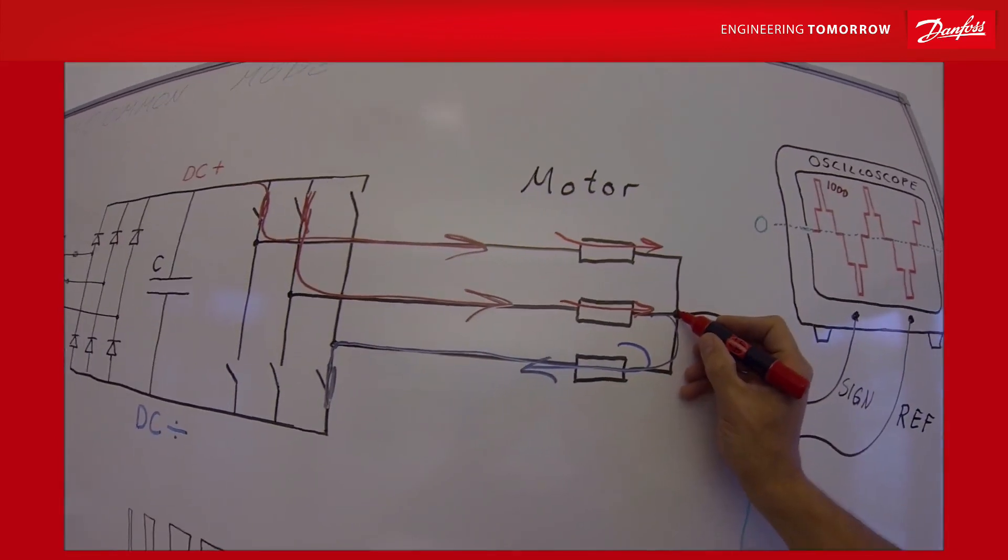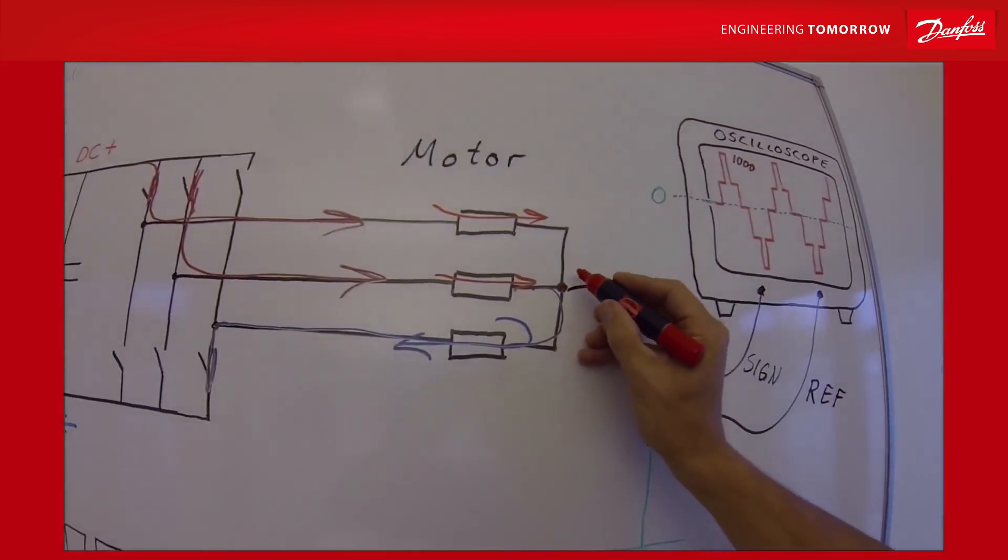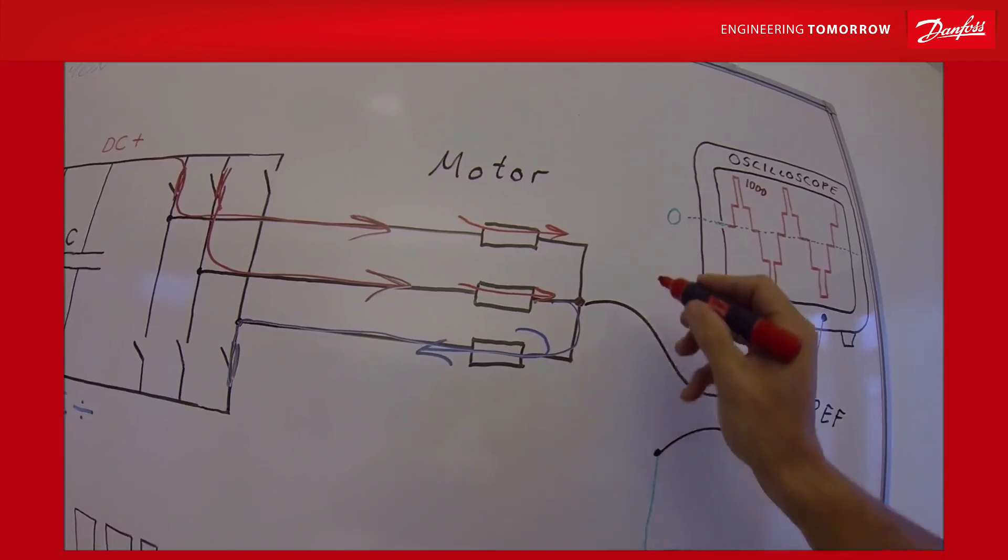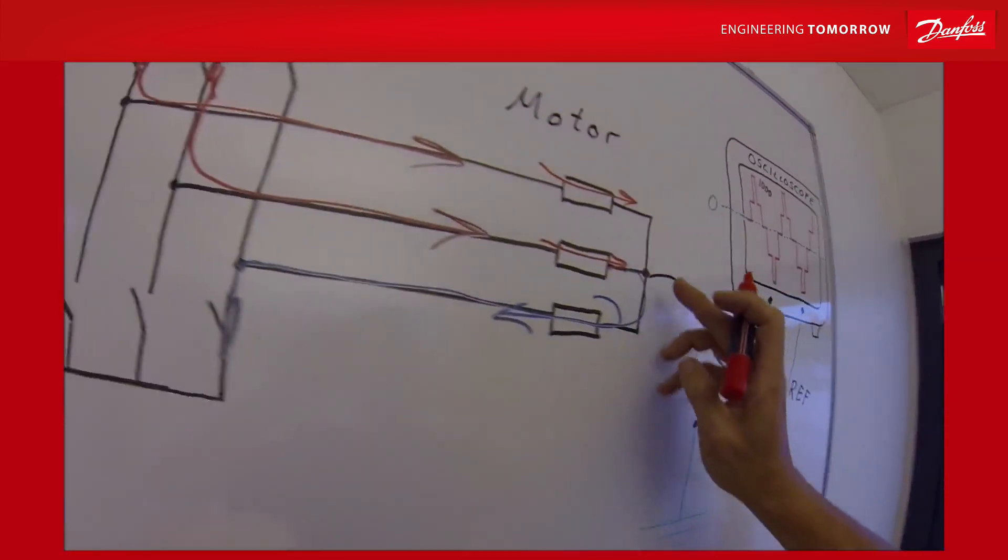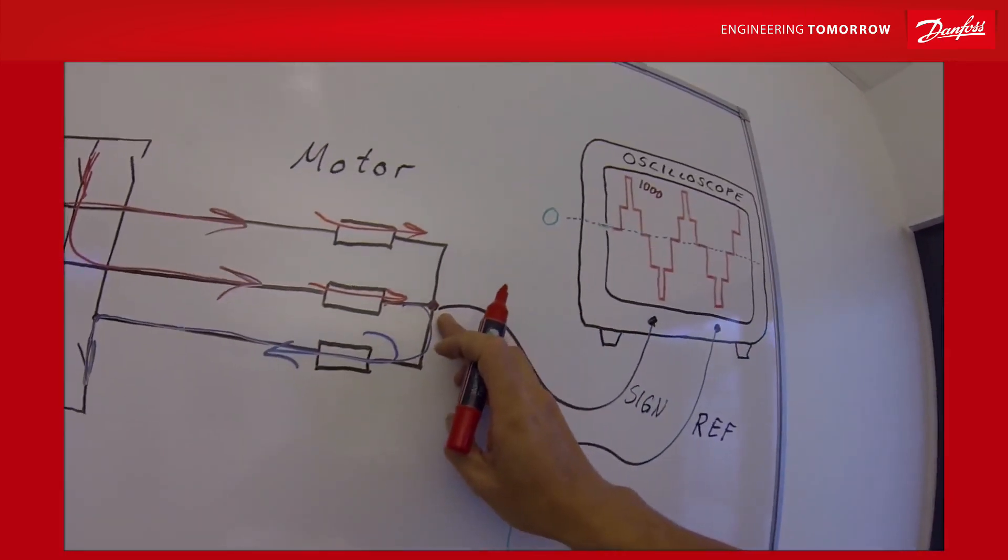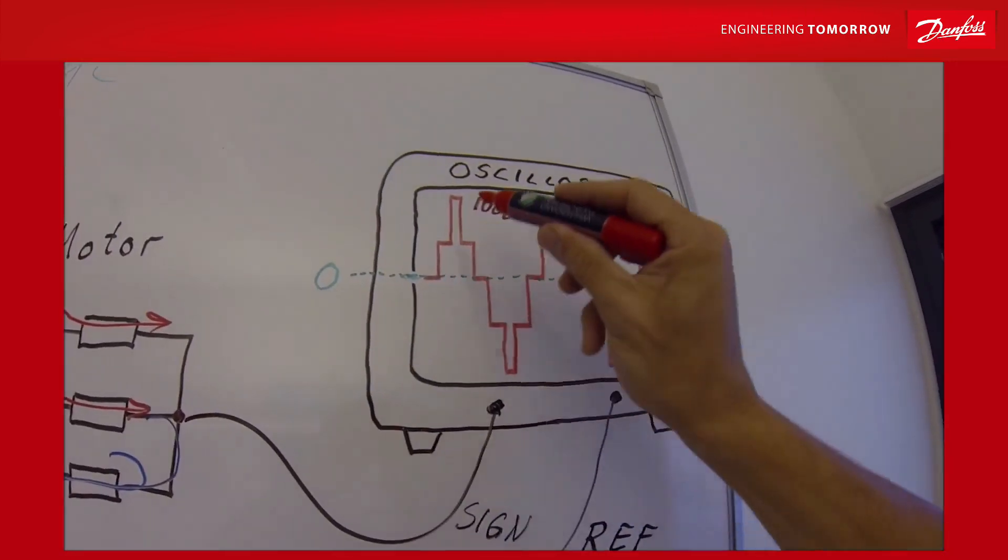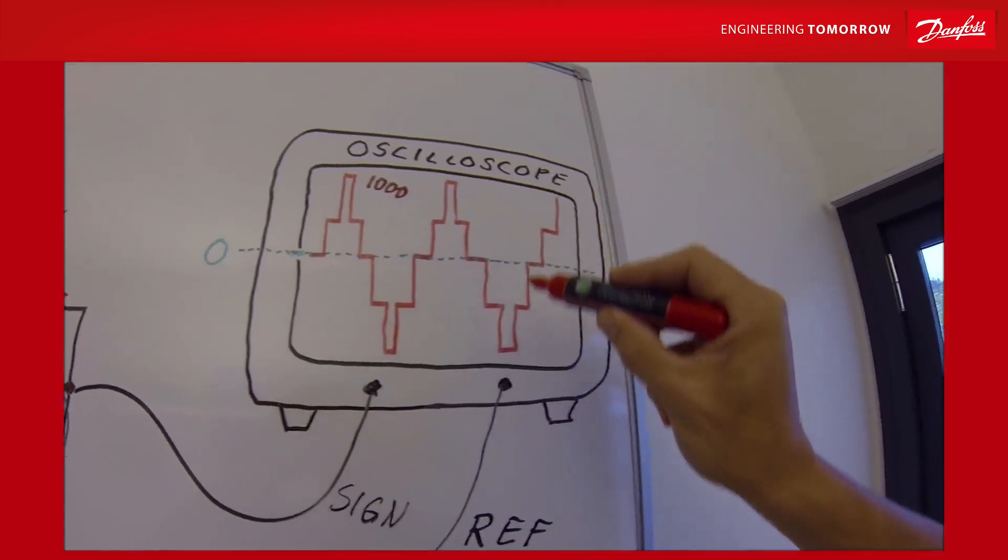So we have created a zero point which is jumping up and down. Depending on the combination of these transistors, this neutral point is no more a neutral point. It goes up and down with the switching frequency.